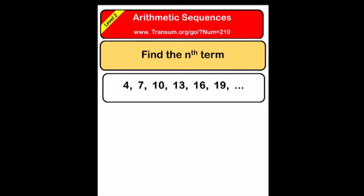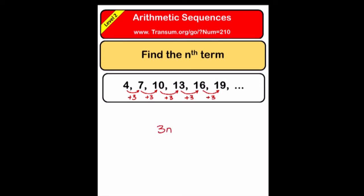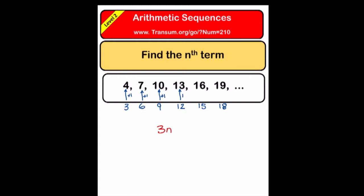Level two asks you to find a formula for the nth term of the sequence. Here we have a sequence where the first term is four and the second term is seven, so the common difference is three. We keep adding three on to each term to get the next term, which is a bit like the three times table. The formula for the three times table is three n. But our sequence is always one more than the three times table, so I can add one onto the three n to get the formula: three n plus one. This formula enables you to work out any term of the sequence.